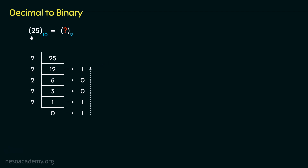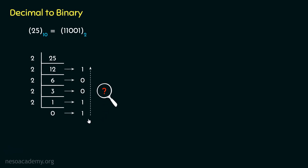So the equivalent binary of 25 in decimal is going to be 11001. Now the question is: why are we retaining the remainders in reversed order? Let's find out.